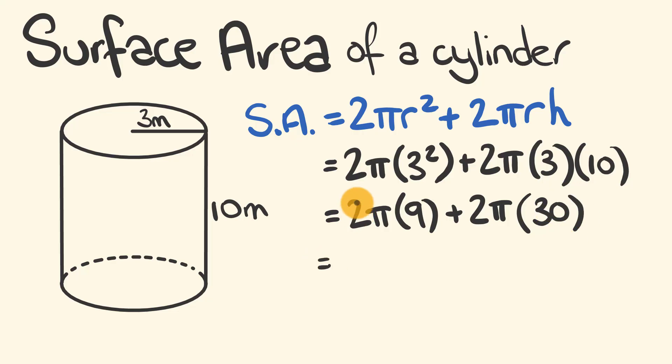Alright, 2 times 9, this is equal to 18, 18 pi. And to this, we have 2 times 30, which is equal to 60. 60 pi. So 18 pi plus 60 pi, this is equal to 78 pi. And that is in meters squared. There's our answer.